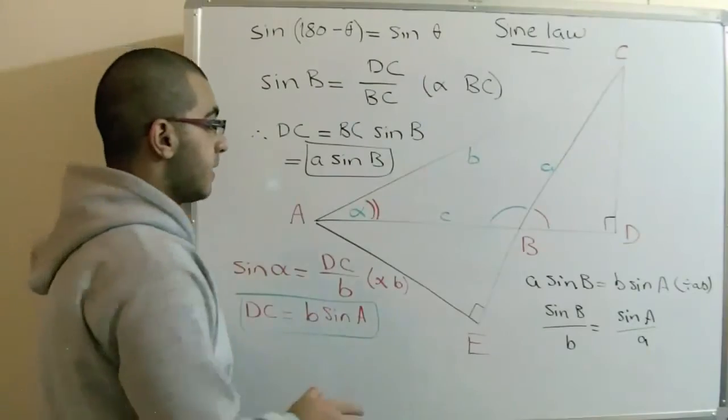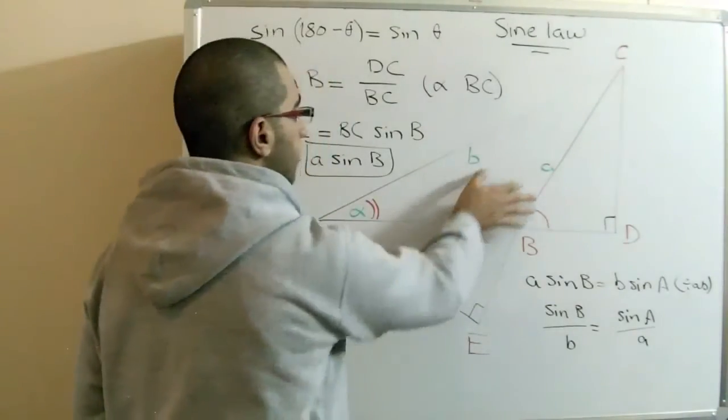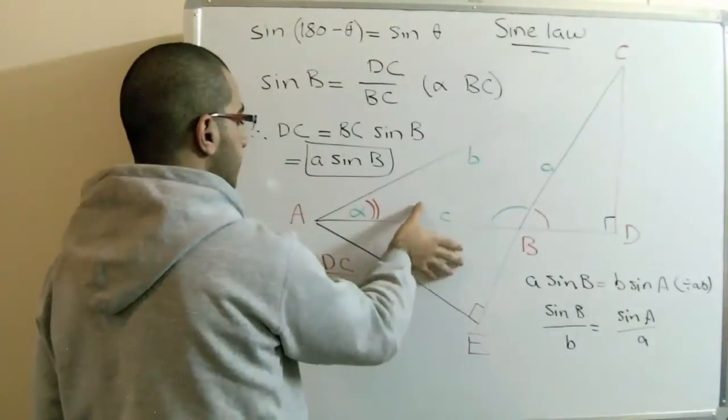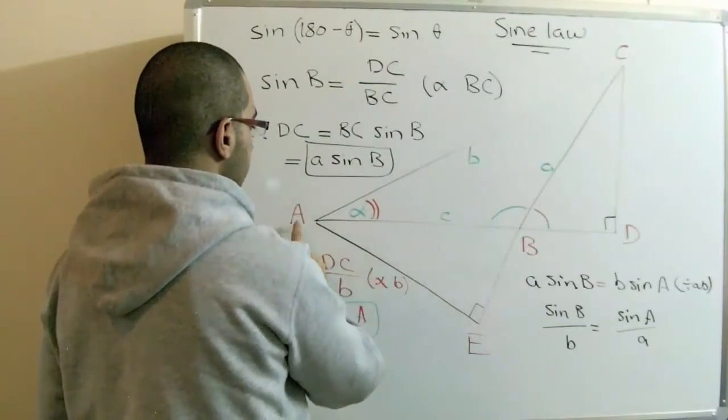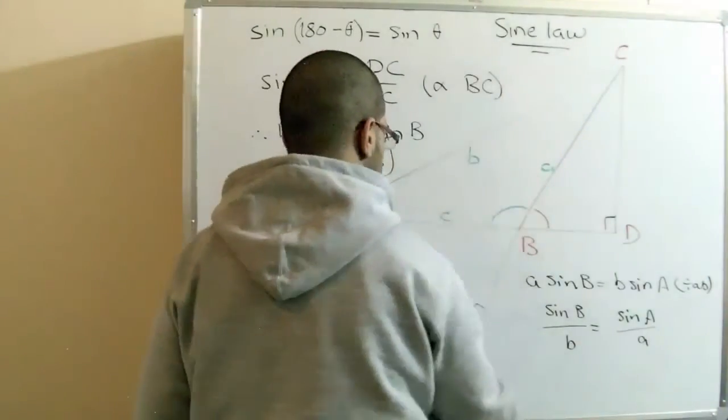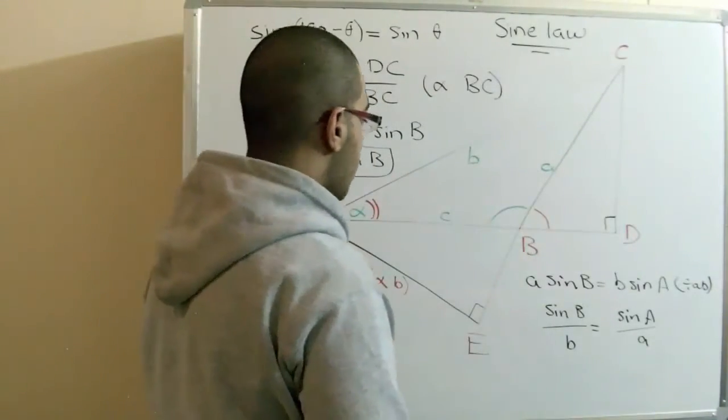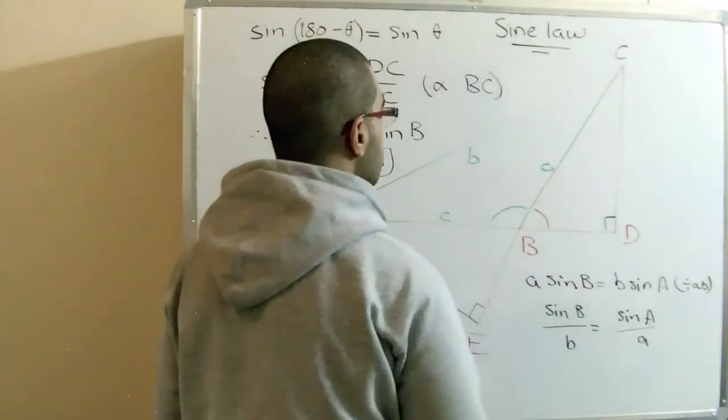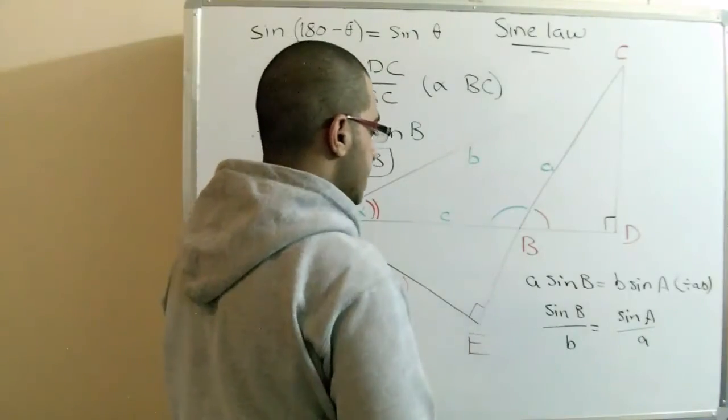If we apply the same steps to this triangle with its other part here, triangle ABE and the triangle ACE, we get the same result. We get sin B over B equals sin C over C.